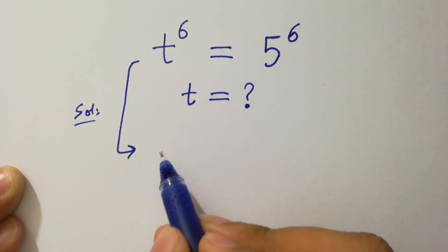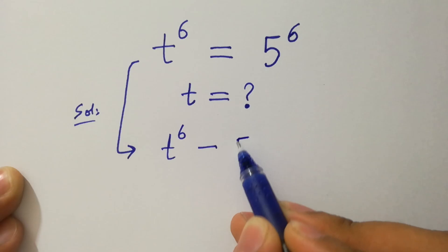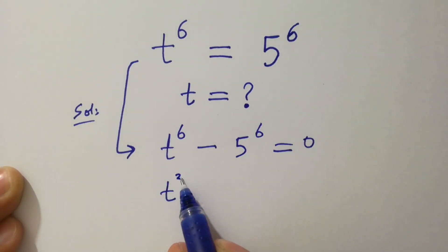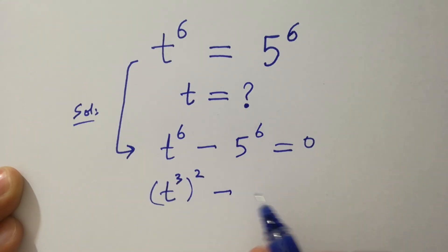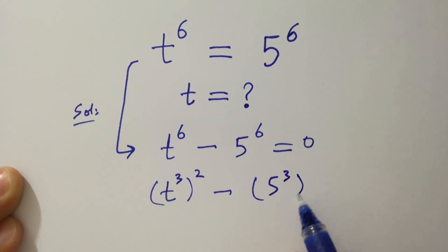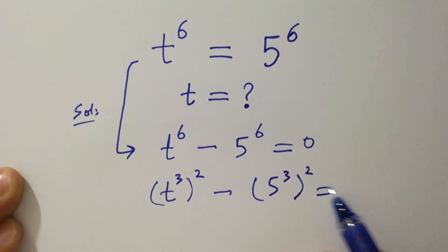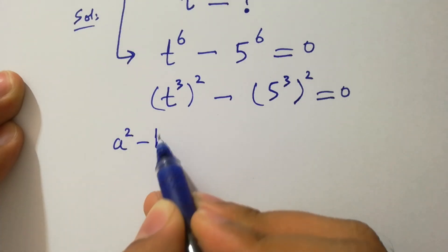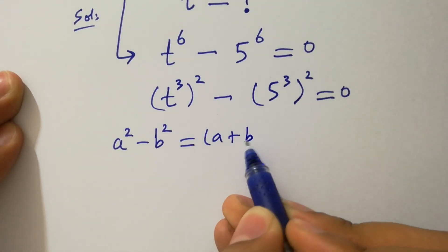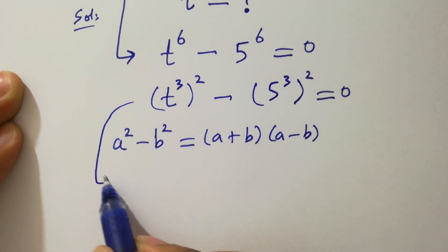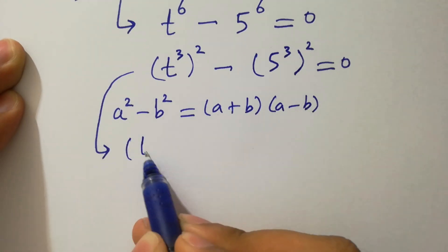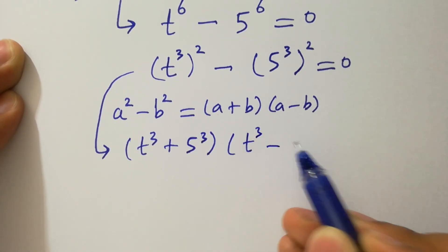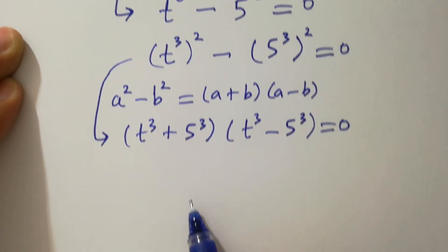It can be written as t to the power 6 minus 5 to the power 6 equals 0, which is the same as (t³)² minus (5³)² equals 0, since 3 times 2 is 6. By the formula a² minus b² equals (a + b)(a − b), it will be (t³ + 5³)(t³ − 5³) equals 0. We have two cases here.